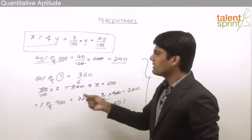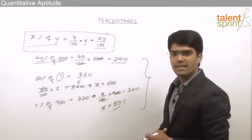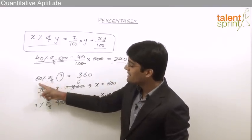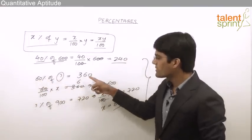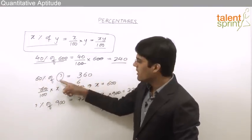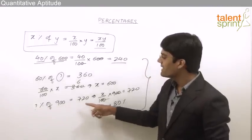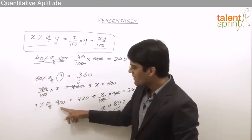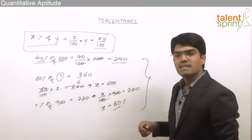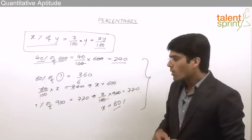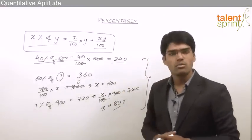As you can see from these three calculations: first, 40 percent of 600 equals 240 — we found the absolute value. Second, 60 percent of what equals 360 — we found the maximum value. Third, what percent of 900 equals 720 — we found the percentage value as 80 percent. All these calculations are based on the equation: x percent of y equals xy by 100.